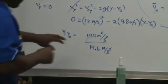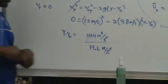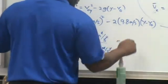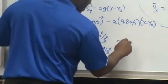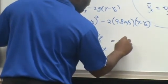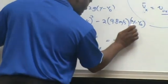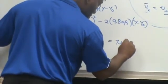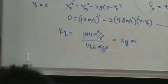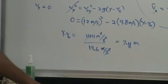So now, 144 divided by 19.6, what do you get? So that's how high that thing went. 7.5 meters.